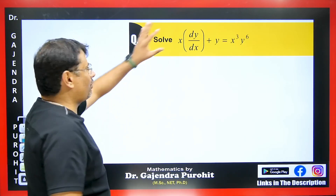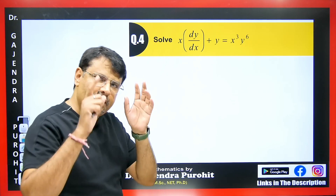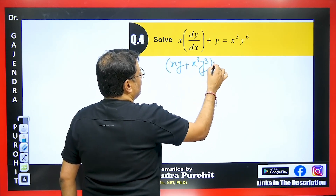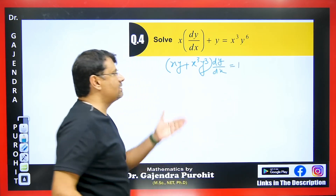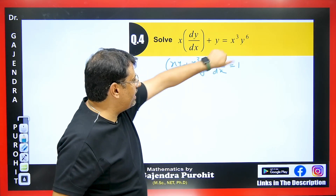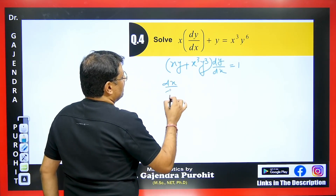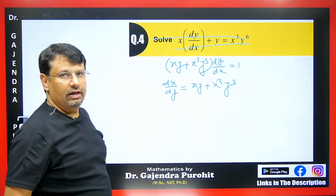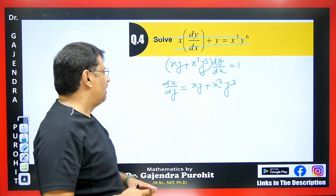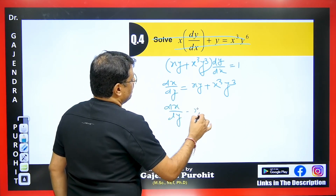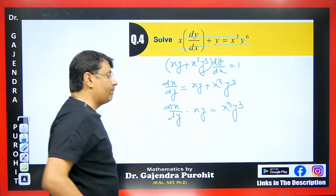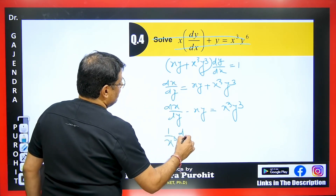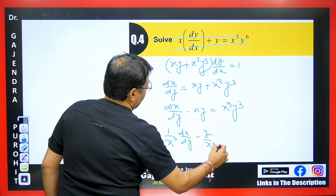Now look at the next question — you can try solving it by dividing by y^6. Let me take another question: Xy plus X³Y³ multiplied by dy/dx equals 1. Taking dx/dy to the other side: dx/dy minus xy equals x³y³. Dividing by x³: (1/x³)·dx/dy minus 1/x² equals y³. This is now reducible to linear in X.